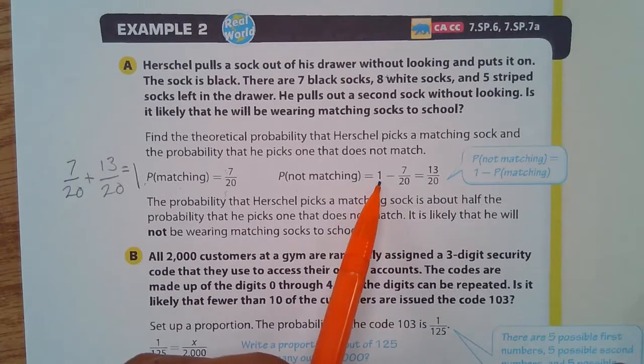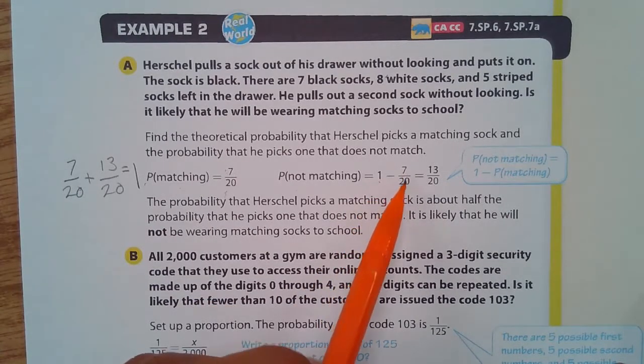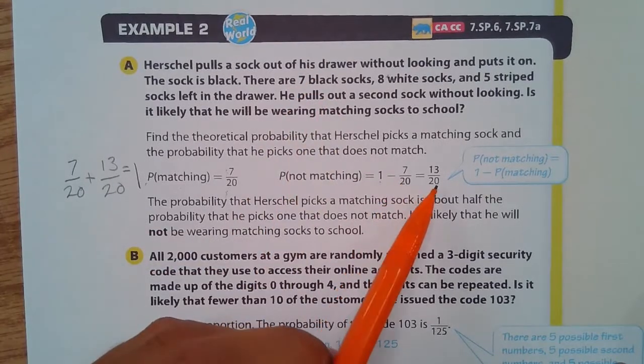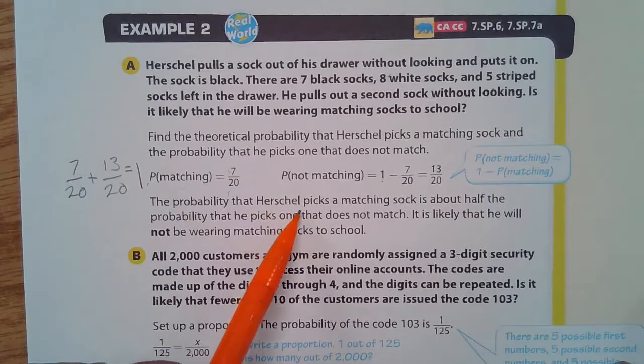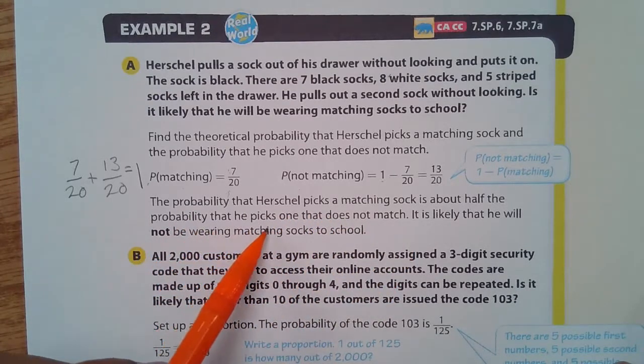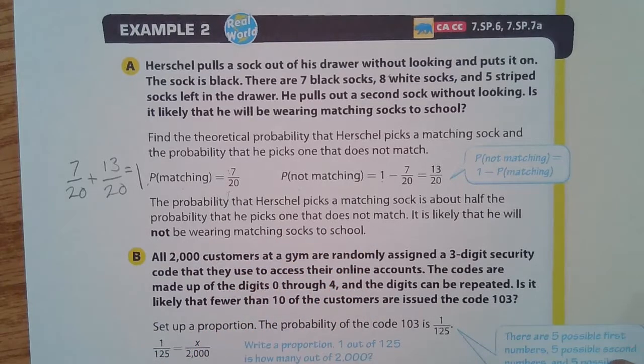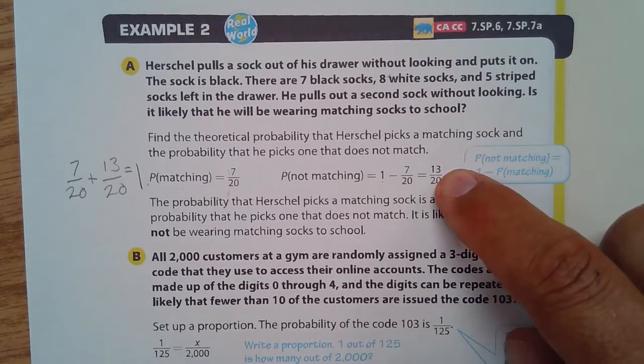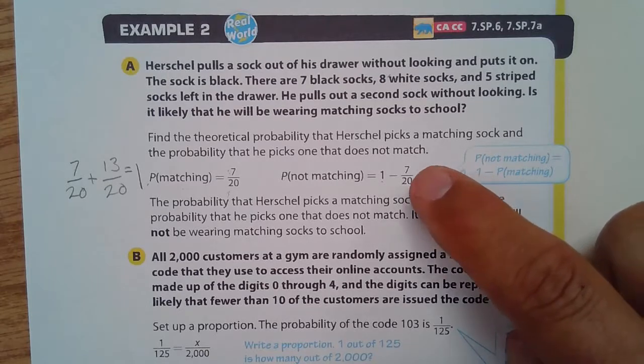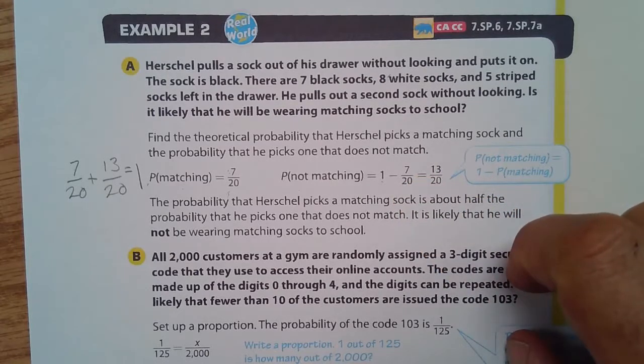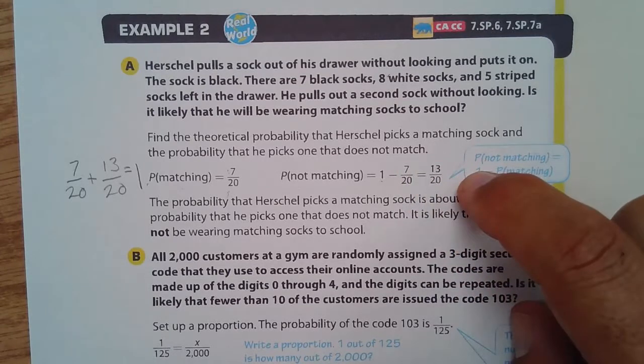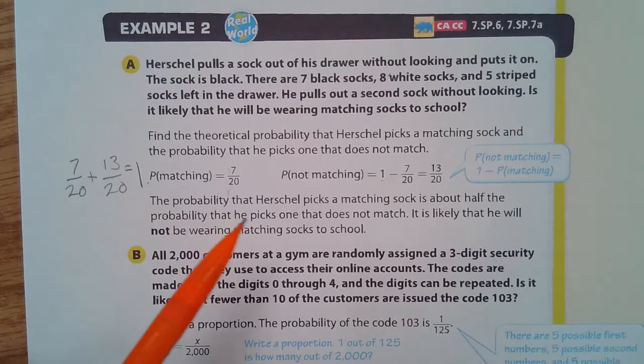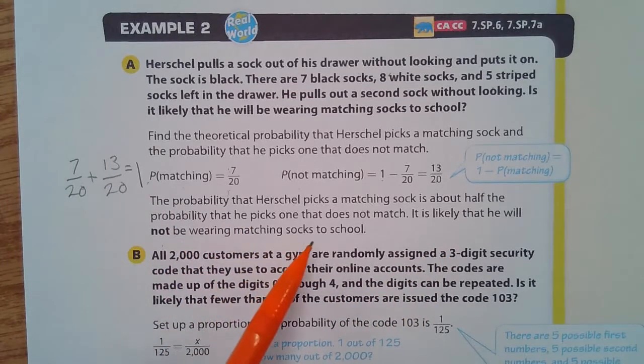So what they're talking about is, okay, all the socks minus the seven that are the black ones is the rest of them. The probability that Herschel picks a matching sock is about half the probability he picks one that does not match. So that 13/20 is about half of that because 14/20 would be half of 7/20.